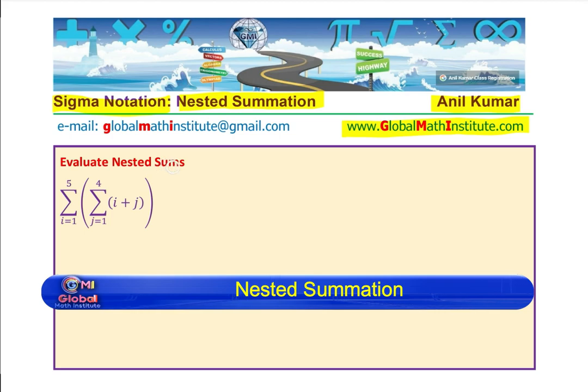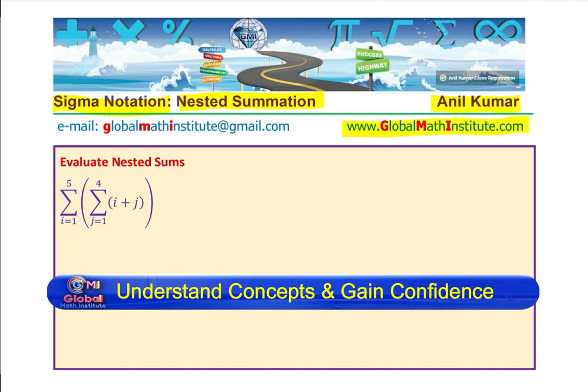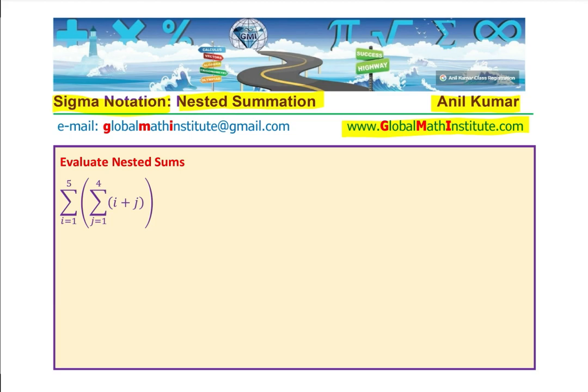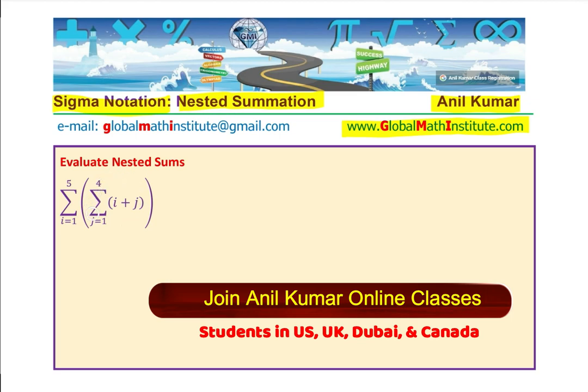The question is to evaluate nested sums: sigma of i going from 1 to 5, and inside is sigma summation of i plus j where j changes from 1 to 4. I'd like you to pause the video, answer this question, and then look into my suggestions. Now to solve such a question we have to do the inside operation first.